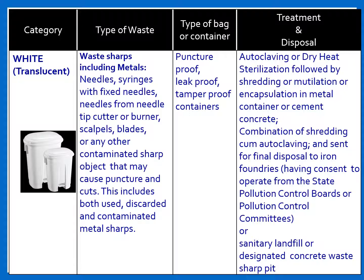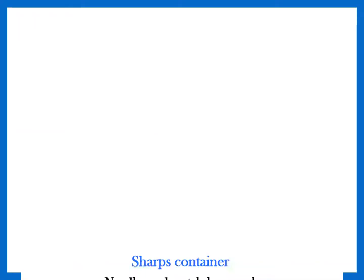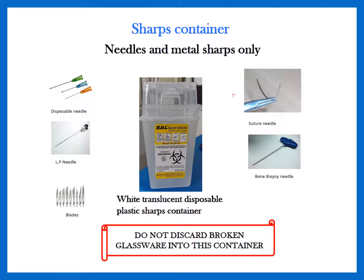Next comes the white category, where waste sharps including metals need to be discarded. This includes needle syringes with fixed needles, needles from needle-tip cutters or burners, scalpel blades, or any other sharp contaminated object that may cause puncture and cuts. These need to be discarded in white translucent, puncture-proof, leak-proof, and tamper-proof containers. The ideal method of disposal is autoclaving or dry heat sterilization, followed by shredding, neutralization, or encapsulation in a metal container or cement concrete. Note: do not discard any broken glassware into this container.